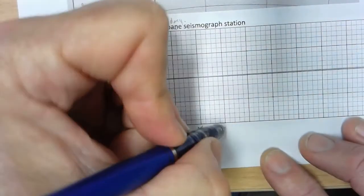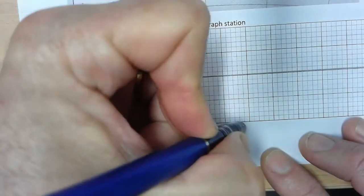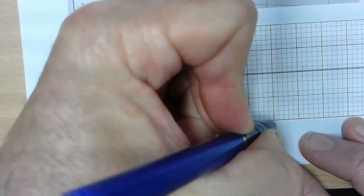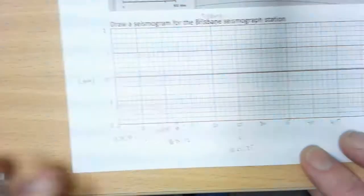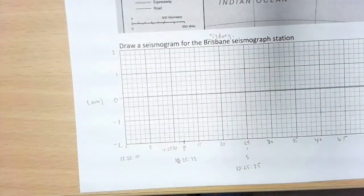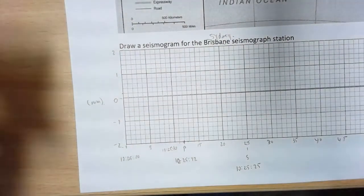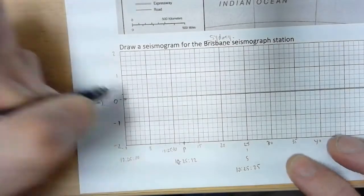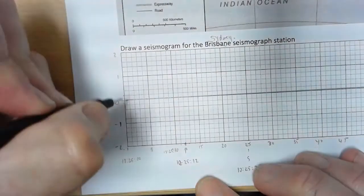And then we can go ahead and just continue to mark this: 35, 40, etc. So now we just need to go ahead and draw our trace. Nothing is happening. I'm going to change to a darker pen so you can see.